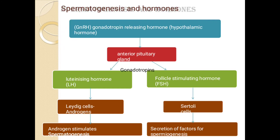After spermiogenesis, sperm head is embedded into Sertoli cells and released from the seminiferous tubules. This process is called spermiation. Now, regarding spermatogenesis and hormones — the hormones responsible are: gonadotropin-releasing hormone (GnRH), a hypothalamic hormone, which activates the pituitary gland. From the pituitary gland, two hormones are activated — luteinizing hormone (LH) and follicle-stimulating hormone (FSH).